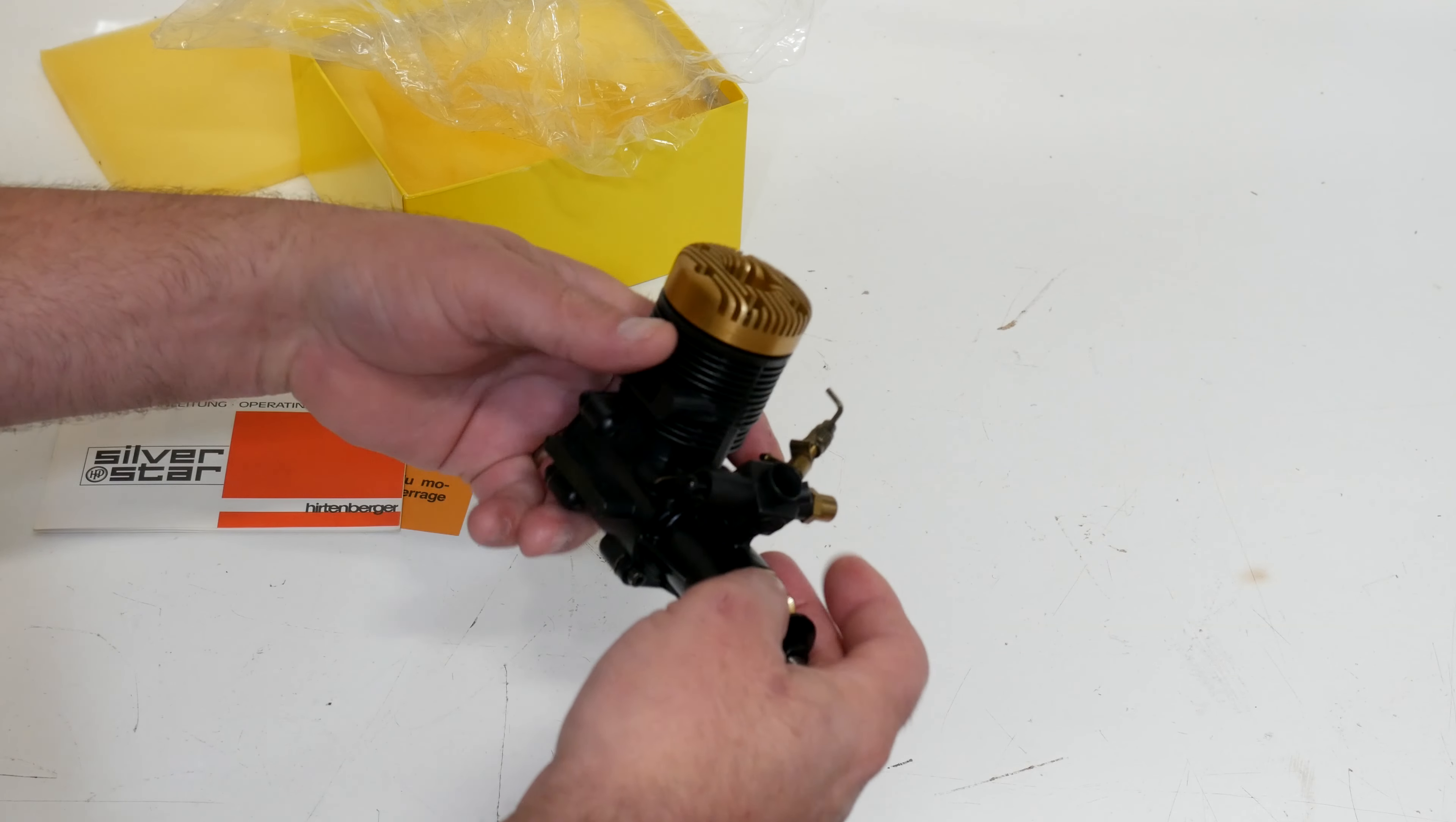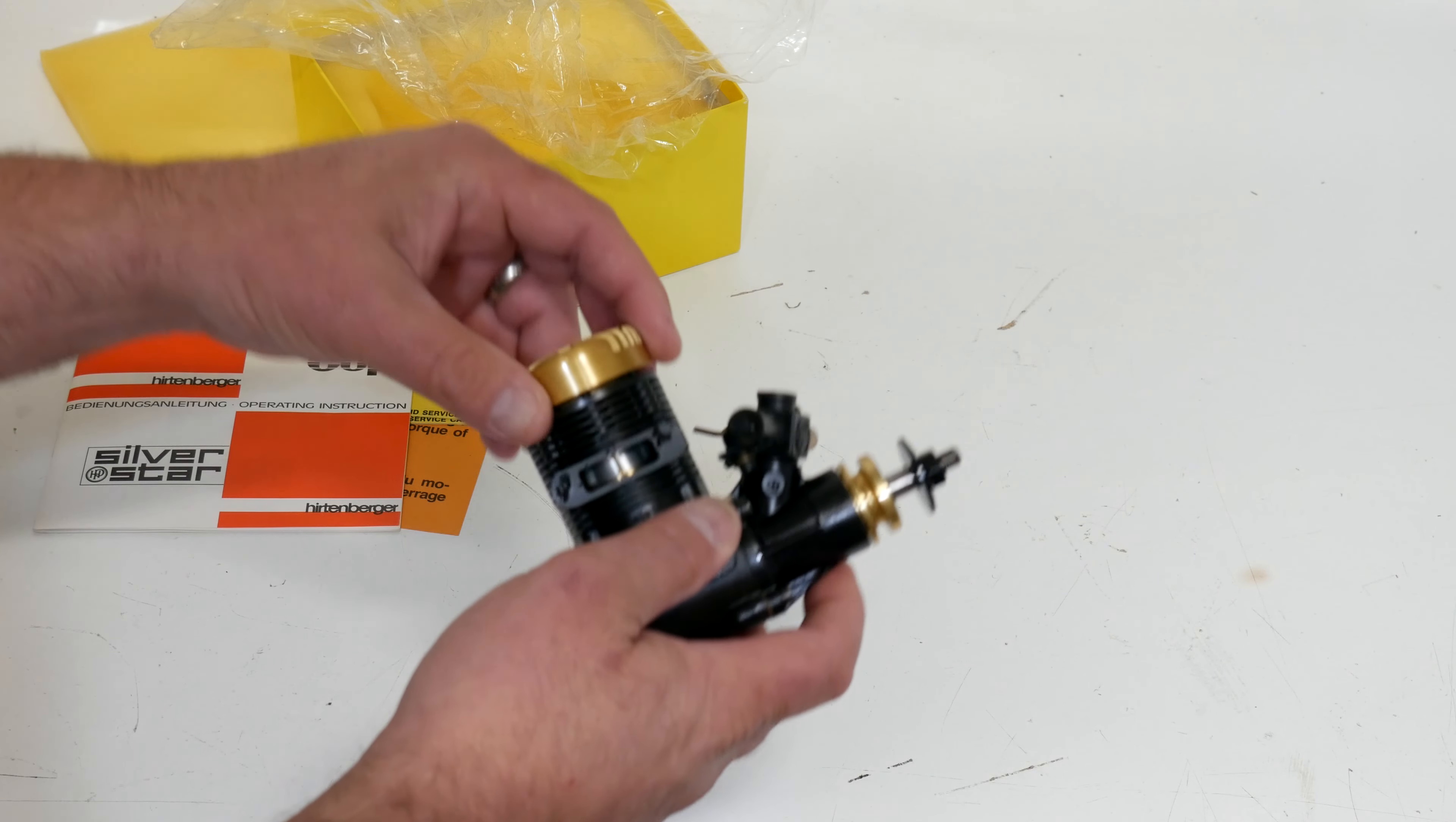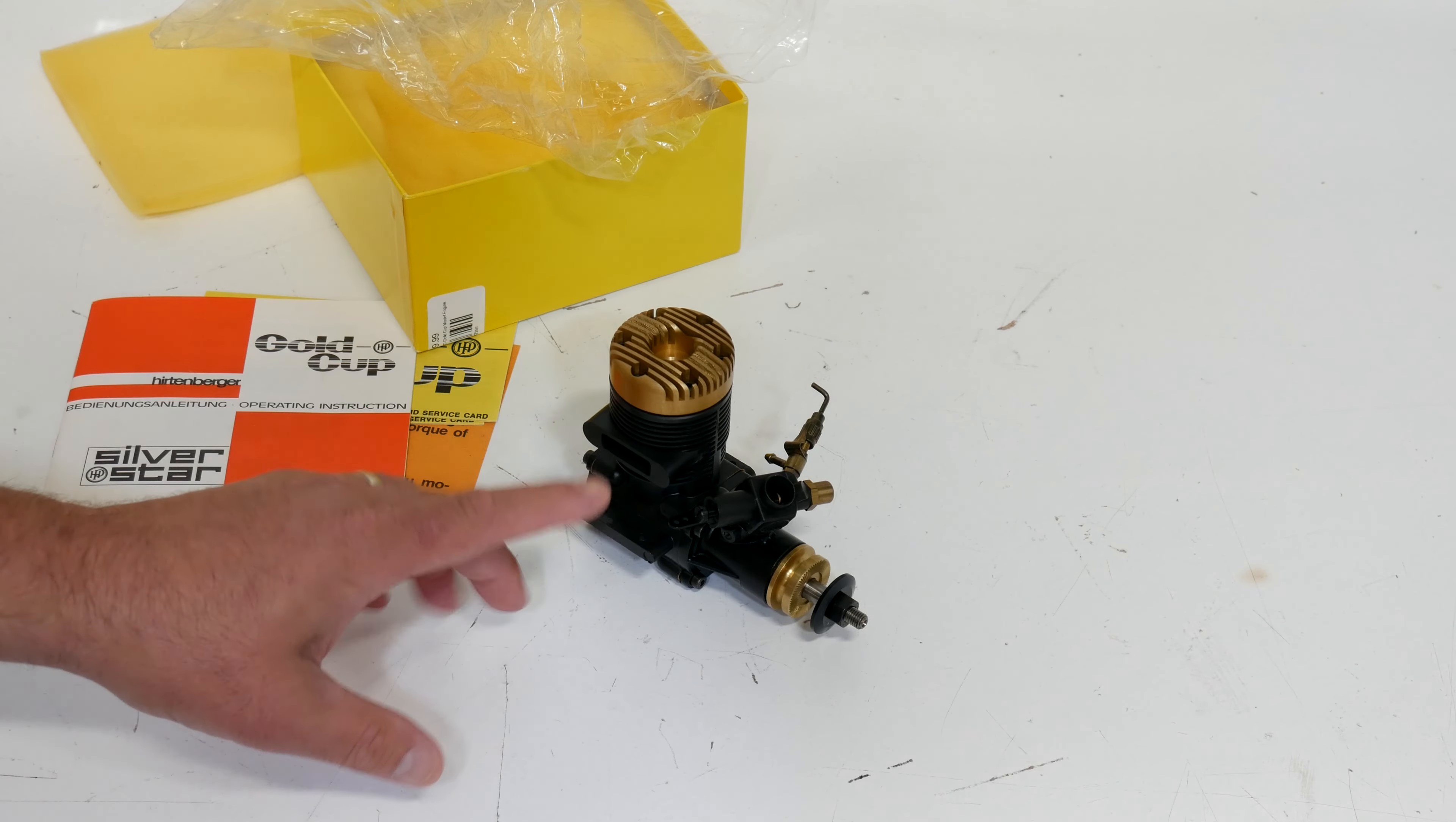Here we have the main event - brand new, never been run HP 61. Now one of the things that everybody seems to love on these is the slide carburetor. We'll get a little bit of a close-up on that to show how that works. Nice slide carburetor, easy action. The way that the needle valve is angled back is actually pretty nice.